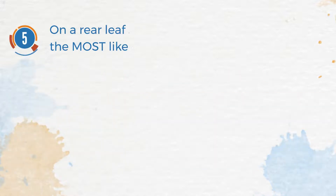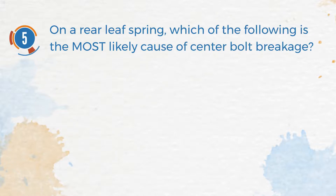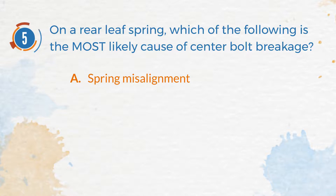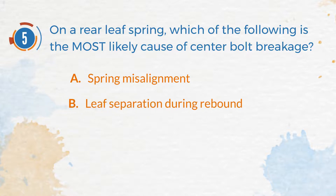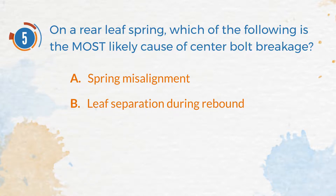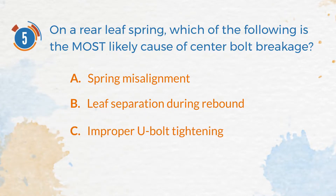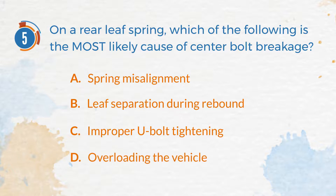Number 5. On a rear leaf spring, which of the following is the most likely cause of center bolt breakage? A. Spring misalignment. B. Leaf separation during rebound. C. Improper U-bolt tightening. D. Overloading the vehicle.